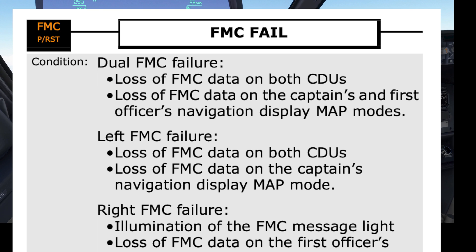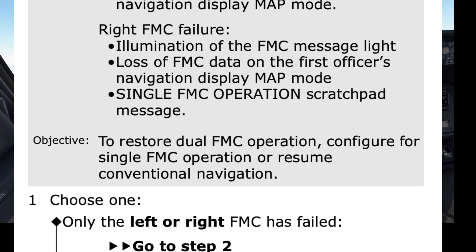Condition — Dual FMC failure: loss of FMC data on both CDUs, and loss of FMC data on the captain's and first officer's navigation display map modes. No, I still have map mode. Left FMC failure: loss of FMC data on both CDUs, and loss of FMC data on the captain's navigation display map mode. Right FMC failure: illumination of the FMC message light, and loss of FMC data on the first officer's navigation display map mode. No, I still have map mode. Objective: to restore dual FMC operation, configure for single FMC operation, or resume conventional navigation. Do you agree this is the correct checklist? I agree.